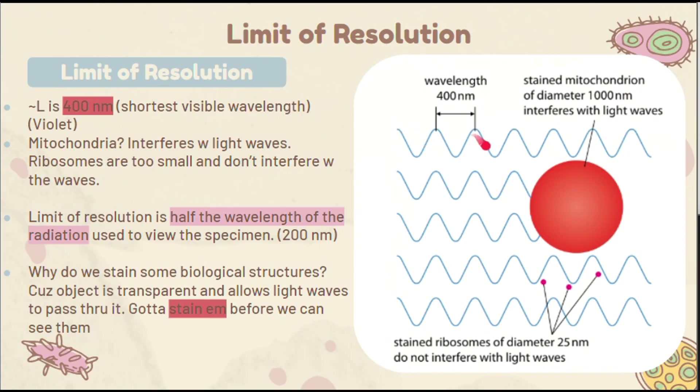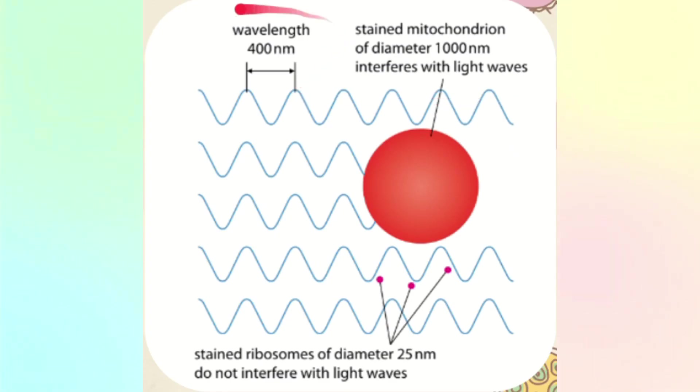This is actually a specimen viewed with a light microscope, with the light appropriately represented by the waves to make things clearer. The wavelength is 400 nanometers, because that's the shortest wavelength in visible light — because we're using a light microscope.